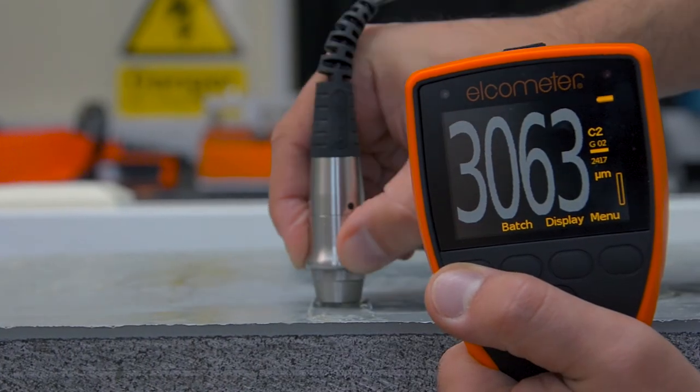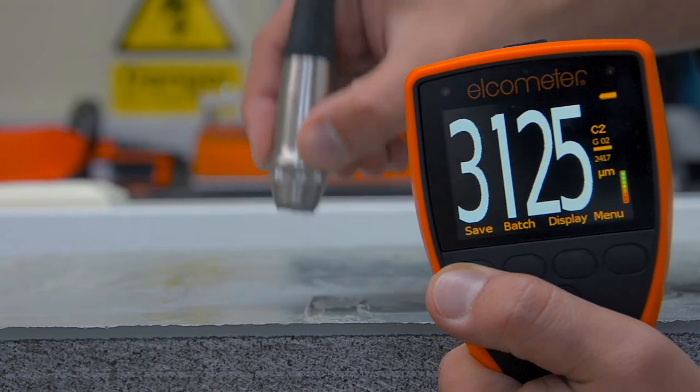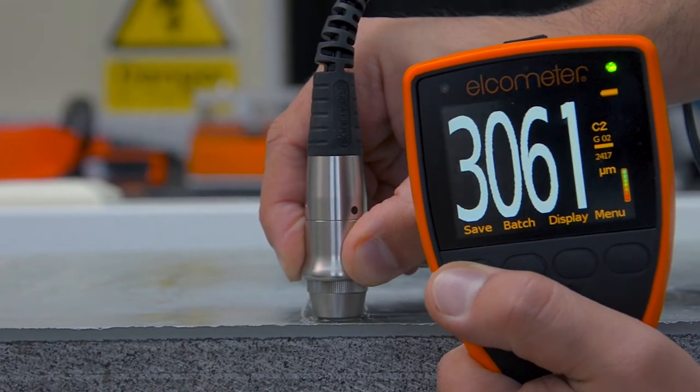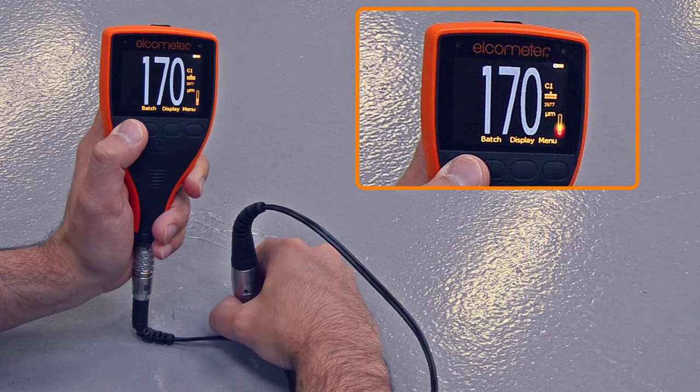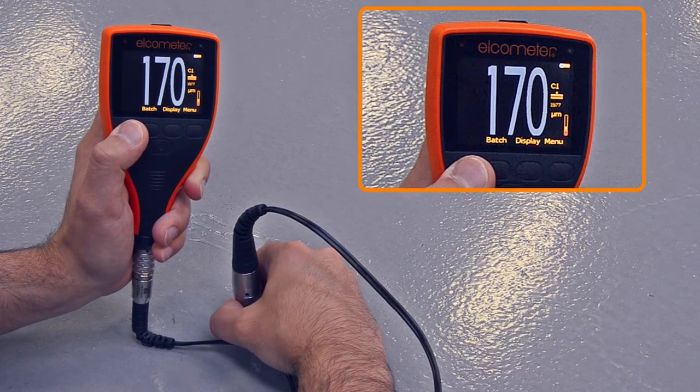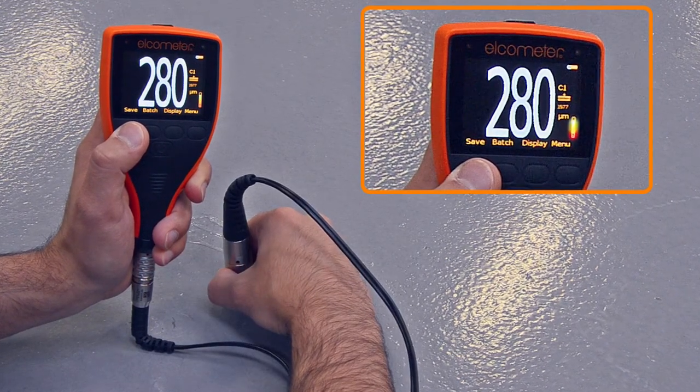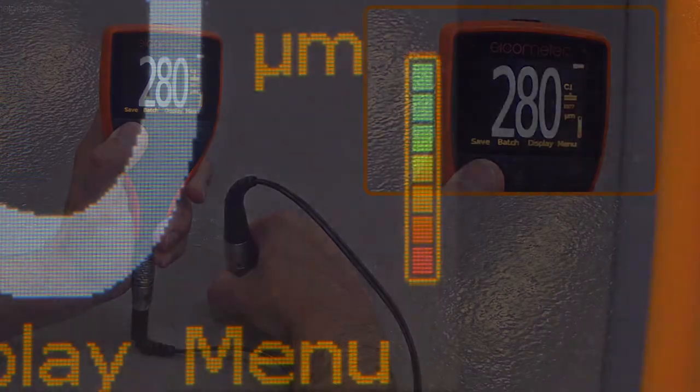Unlike other concrete coating thickness gauges, which produce a reading regardless of how strong or reliable the signal is, the Elcometer 500 avoids false or incorrect readings by only displaying a valid coating thickness if the signal strength indicator is in the green.